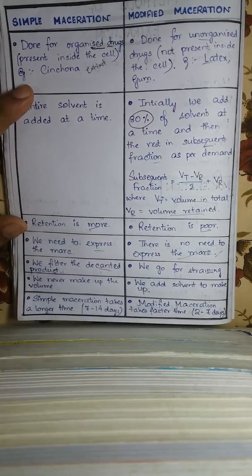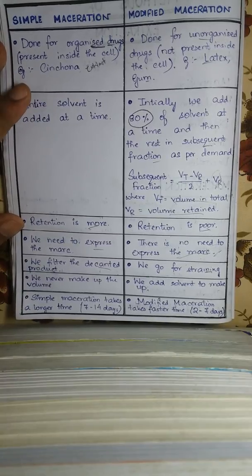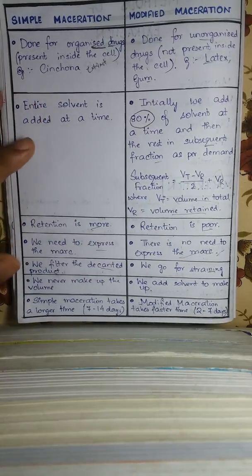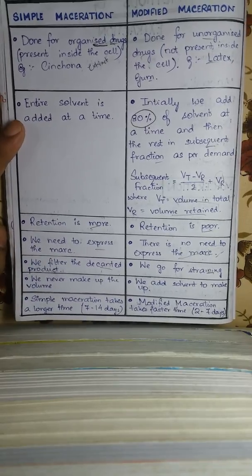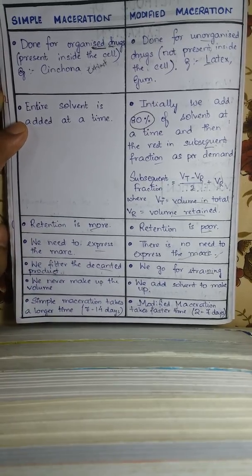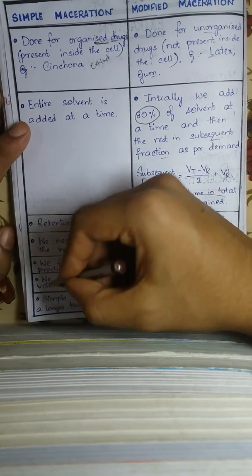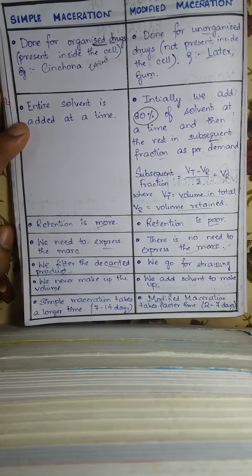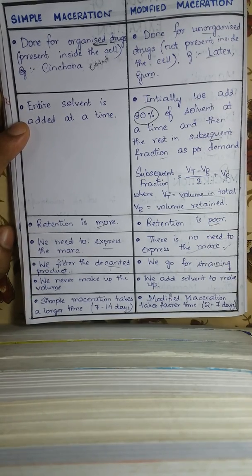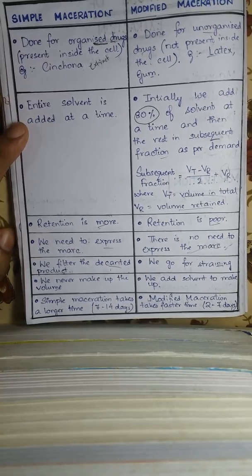In simple maceration, we never make up the volume, because adding more solvent would dilute the product. In modified maceration, however, the product is highly concentrated, so we can add solvent to make up the volume.